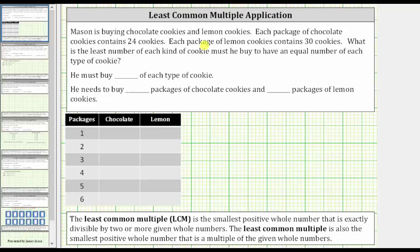Mason is buying chocolate cookies and lemon cookies. Each package of chocolate cookies contains 24 cookies. Each package of lemon cookies contains 30 cookies. What is the least number of each type of cookie he must buy to have an equal number of each type of cookie?